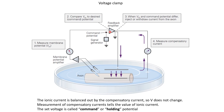At the positive terminal we apply the command voltage, also called the command potential or holding potential — this is the voltage at which we want to clamp the neuron. So if we want to set the voltage of the neuron to +20 mV, we apply +20 mV here, generated using a standard signal generator. The amplifier looks at the difference between the command voltage and the actual voltage of the neuron, multiplies this difference by a very large amplification factor, and feeds the output back into the neuron through a stimulating electrode.